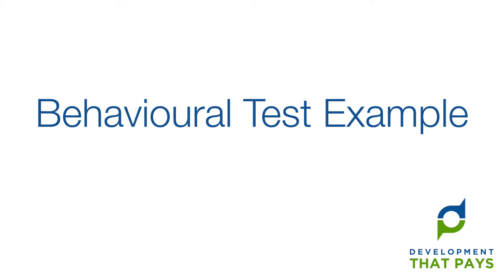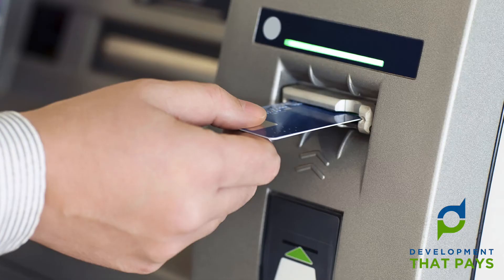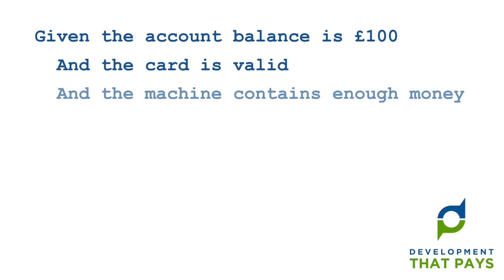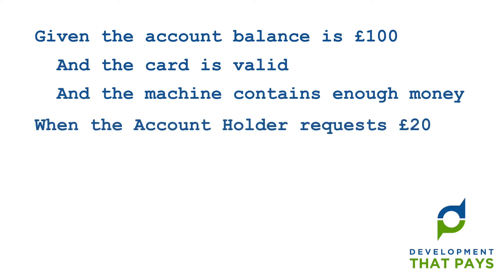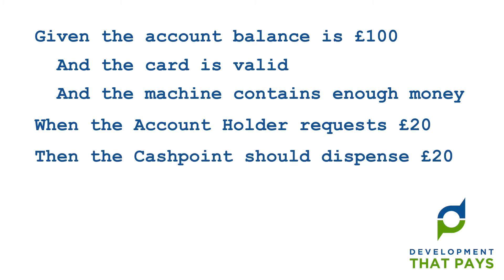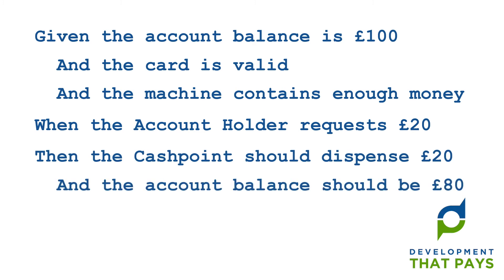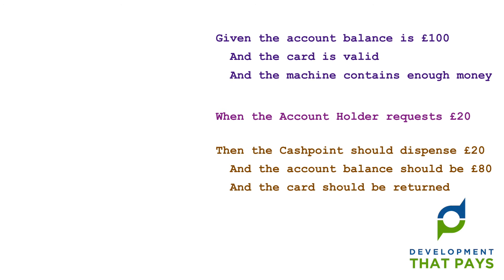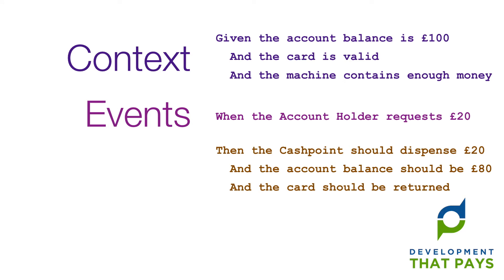I'll come back to the story in a moment, but I think it's high time we had an example of a real behavioural test. Let's take the example of using a cash machine. One of the tests might go as follows: Given the account balance is £100, and the card is valid, and the machine contains enough money — When the account holder requests £20 — Then the cash point should dispense £20, and the account balance should be £80, and the card should be returned. Notice: it's written in plain English with no technical terms, and it has three sections — the context, the action, and the consequences of the action.